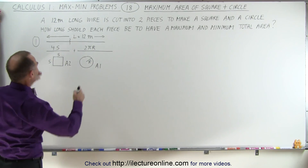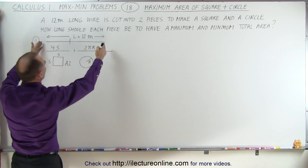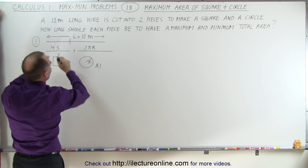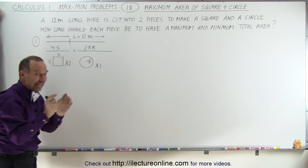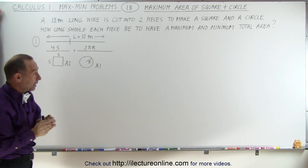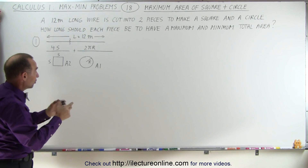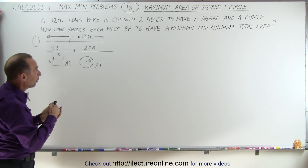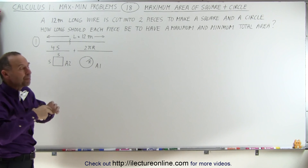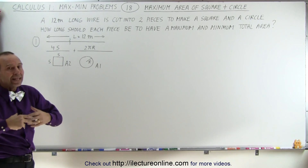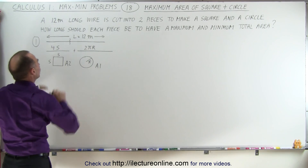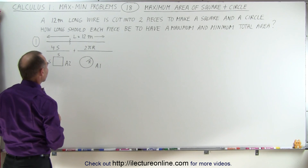We start with a 12-meter-long piece of wire and cut it into two pieces. We don't know how big each piece should be — and that's the question: how big should each piece be so that we'll have a maximum and a minimum area between the two figures?